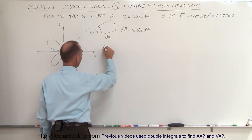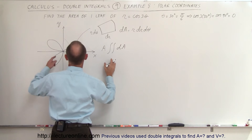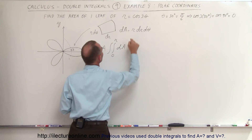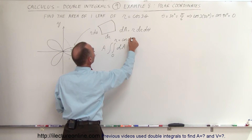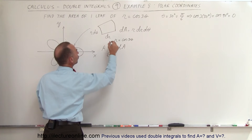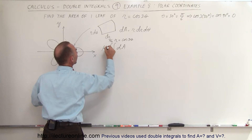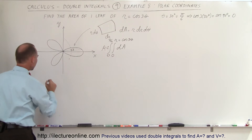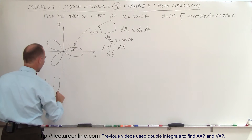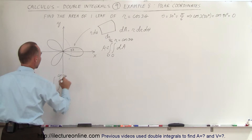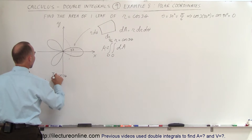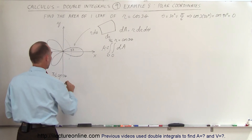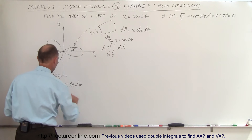The area is going to be the double integral of dA. The first limit goes from 0 to the outer limit R, where R is defined by cosine of 3 theta. Then we integrate theta from 0 to pi over 6, and double the result because we're taking half the area of the leaf. So the area equals 2 times the double integral, with R limits from 0 to cosine of 3 theta and theta limits from 0 to pi over 6, and dA = R dr d theta — so we integrate over R first.